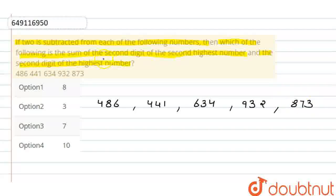You can see what we have done. Each number is 2 subtracted from each number. So, 486 minus 2, that is equal to 484.